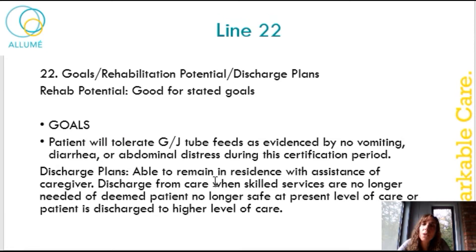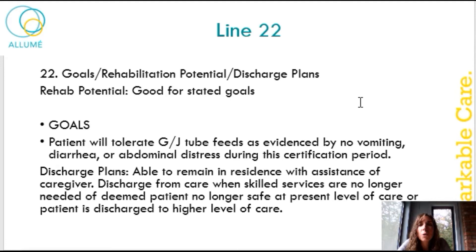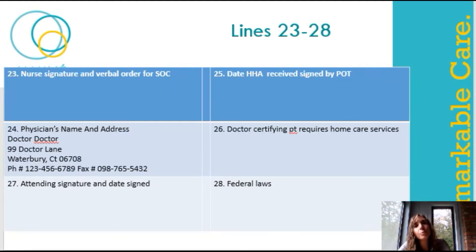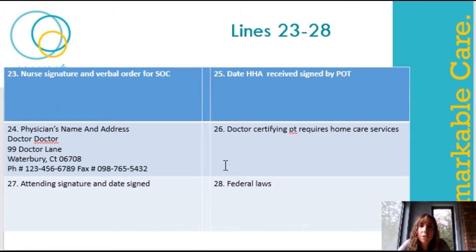Line 22 is talking about our goals — what are our goals or rehab potential for our patient? It also talks about discharge planning. Most of our patients stay on service with us for a pretty significant amount of time. Lines 23 through 28 are at the bottom of your care plan. Number 23 on the first page is your nurse signature and the date that we received the care plan signed, along with the physician's name and address that is in charge of signing for all these orders.